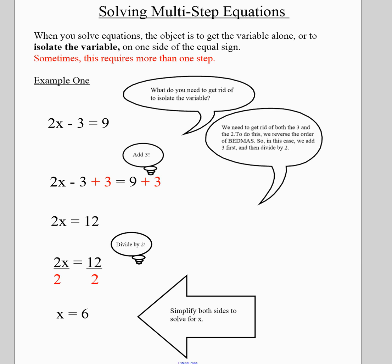So how do we get rid of subtracting 3? We add 3. And remember, just like with simple equations, you have to add 3 to both sides. Once you add 3 on the left-hand side, these will cancel out.